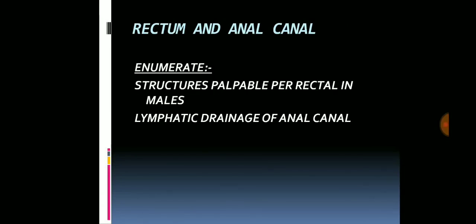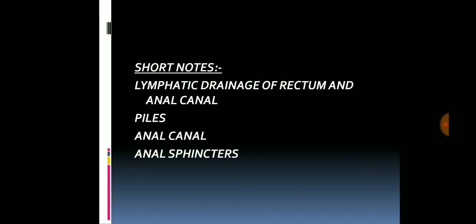Moving on to the rectum and anal canal. The enumerate questions from this chapter include: structures palpable per rectum in males — this is a very important question and it's surely going to come — and lymphatic drainage of the anal canal, which is less important. For short notes, a short note on piles is very, very important. Short notes can also be asked on lymphatic drainage of the rectum and anal canal, and on the anal canal and anal sphincters.